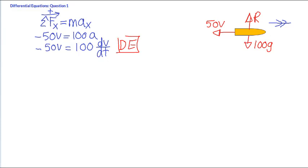Now, on to separating the variables. So, divide both sides by 100 equals dV over dt. Then, multiply both sides by dt. So, we get minus 50 over 100 is minus a half V dt is equal to dV.